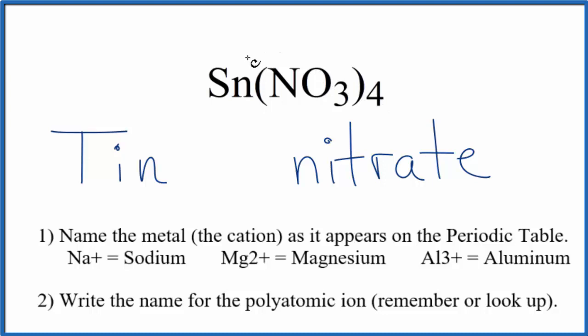We said that Sn, tin, is a transition metal, and that means it can have a different ionic charge dependent on what it's bonded to.